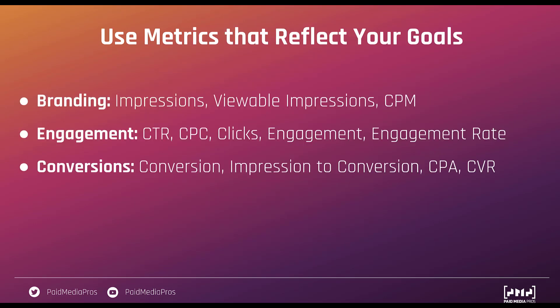Aside from all the different components to look at when analyzing your ad test, you also need to know what metrics to look at. Just like with search campaigns or social campaigns, your campaigns might have different goals, and depending on those goals you need to look at the right metrics. For branding, maybe you need to look at just impressions, viewable impressions, and cost per thousand impressions or CPM, because you're really just trying to get in front of people. For engagement, the metrics you might compare could be click-through rate, cost per click, the clicks themselves, or engagement rate metrics. And if you're focusing on conversions, you're going to want to focus on conversion volume, cost per conversion, and conversion rate.